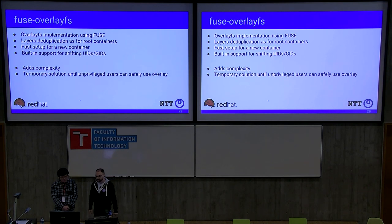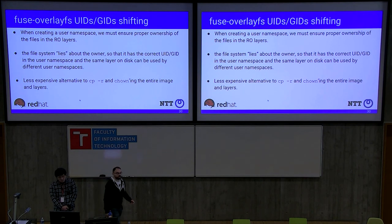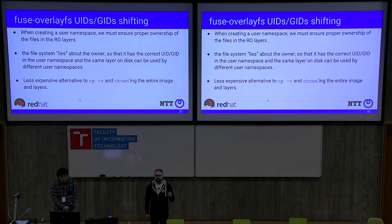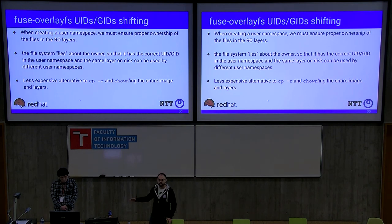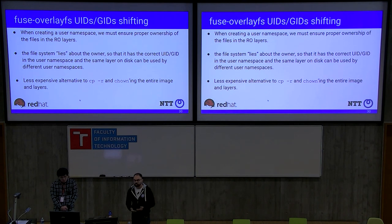The cost is that it adds complexity — quite a lot of new code that can introduce new bugs in the stack. When you create a user namespace, by default we map your unprivileged user to root, and then all the additional IDs specified in the sub-UID map from 1 upward. But you can still create your own custom mapping with the user namespace, and we allow that.